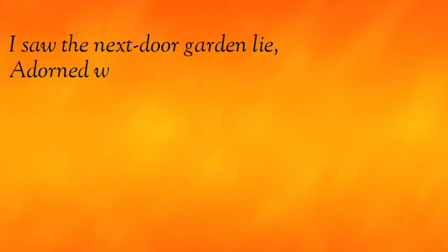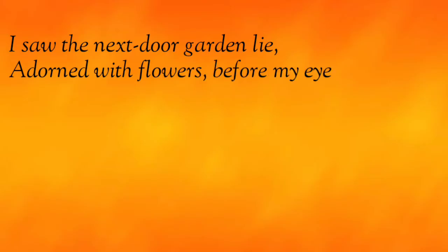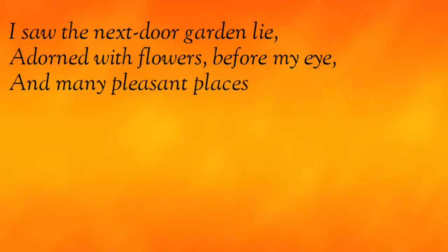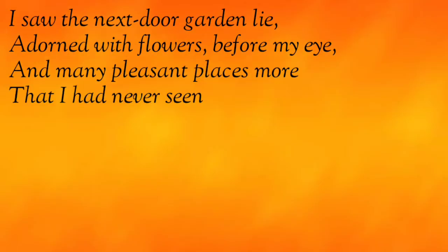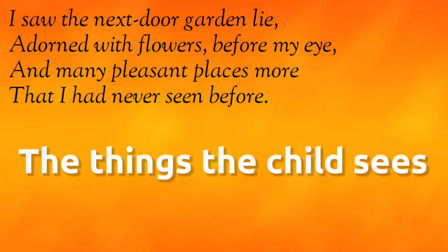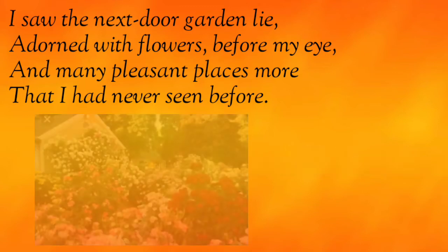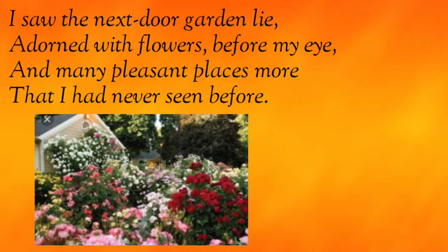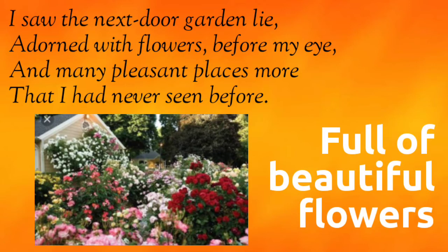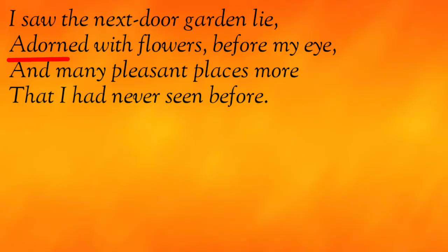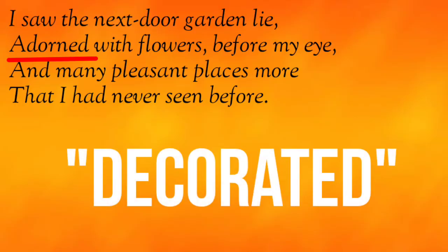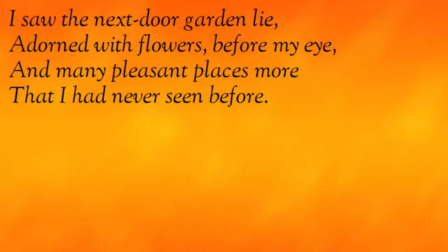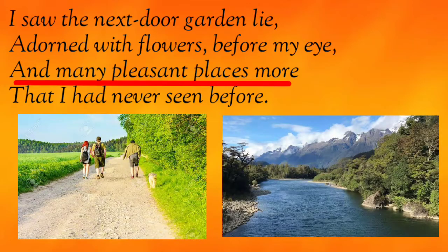Stanza 2 reads: 'I saw the next door garden lie adorned with flowers before my eye, and many pleasant places more that I had never seen before.' In this stanza, we get to know about the things the child sees. He sees the garden next door which is full of beautiful flowers. 'Adorned' here means decorated. Along with the garden, the poet is able to see other pleasant places he had never had a chance to see.